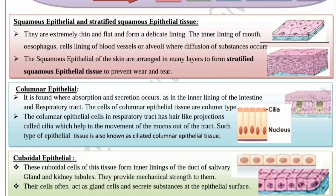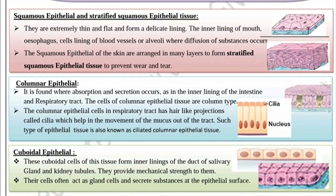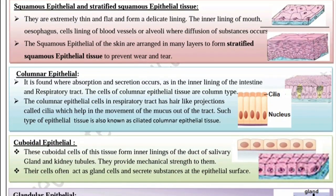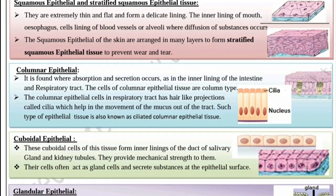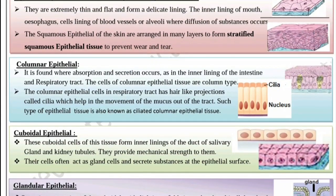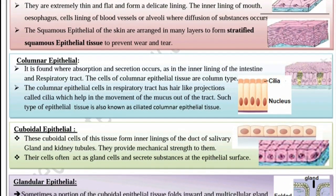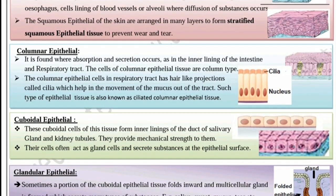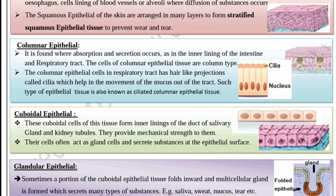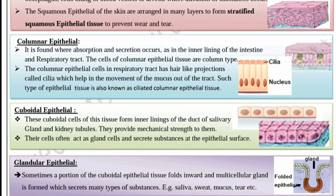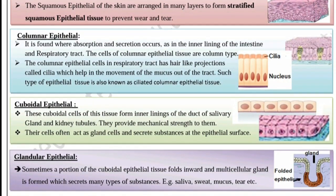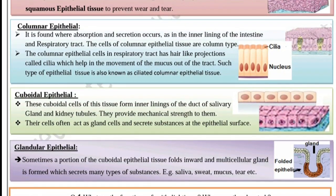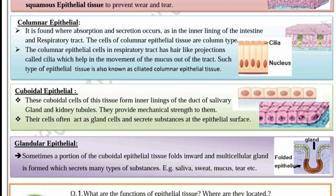Columnar epithelial is found where absorption and secretion occur, as in the inner lining of the intestine and respiratory tract. The cells of columnar epithelial tissues are column-type. The columnar epithelial cells in the respiratory tract have hair-like projections called cilia, which help in the movement of mucus out of the tract. Such tissue is also known as ciliated columnar epithelial tissue.